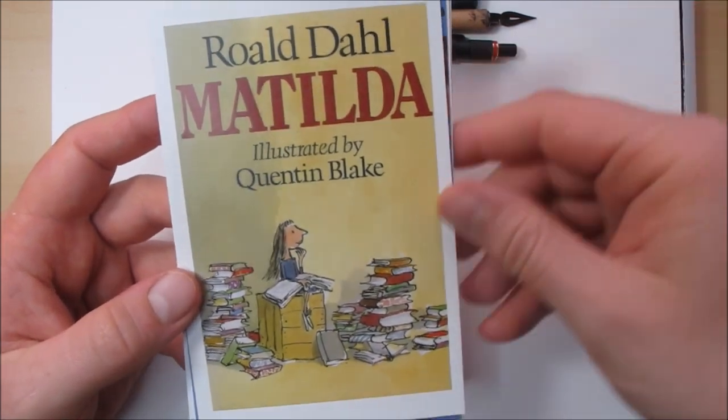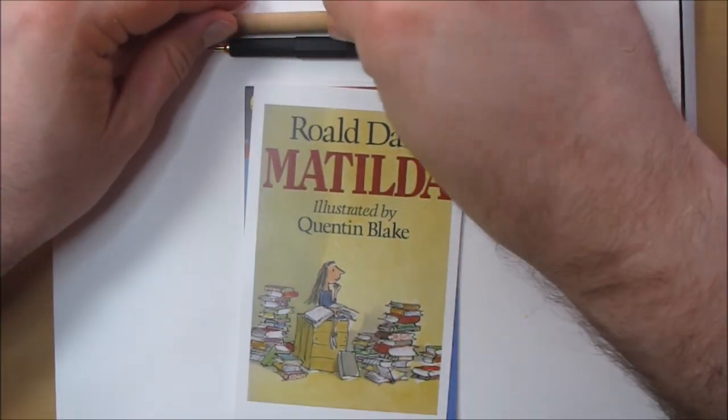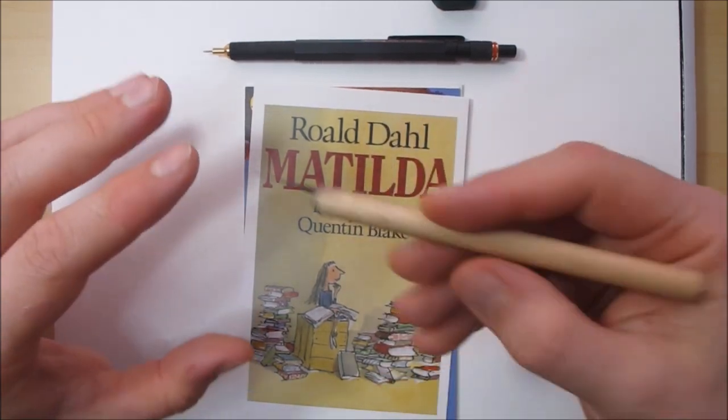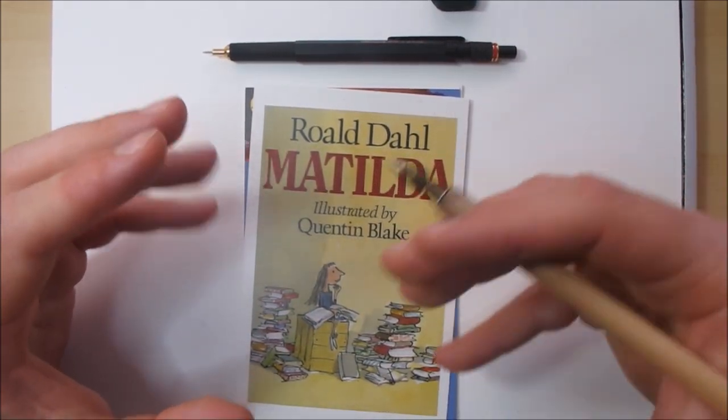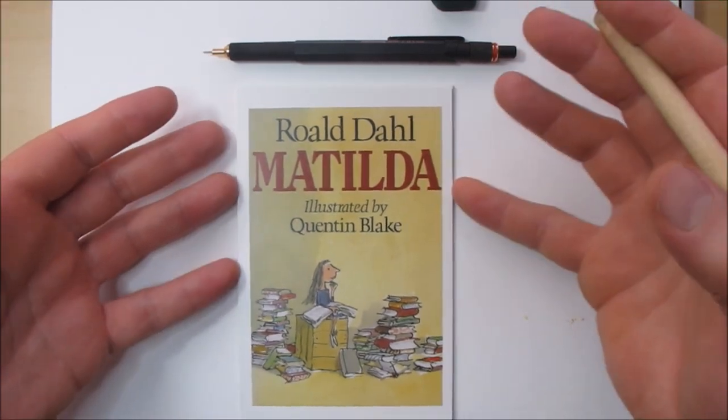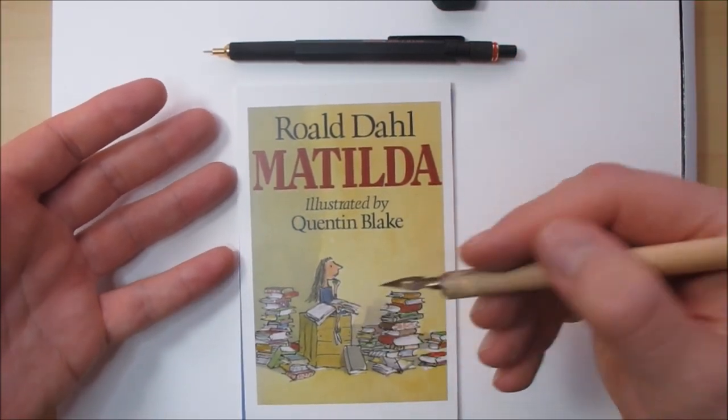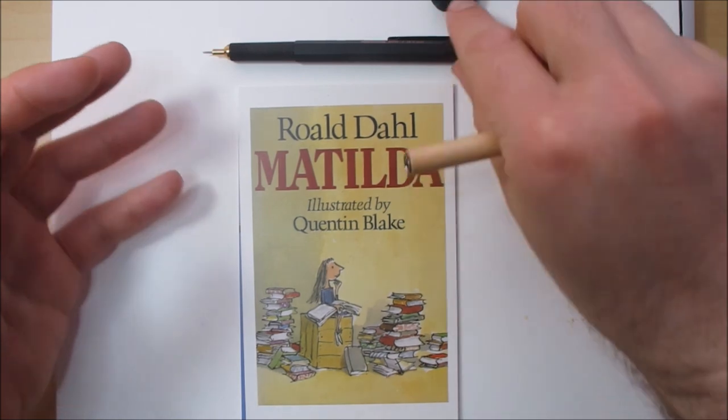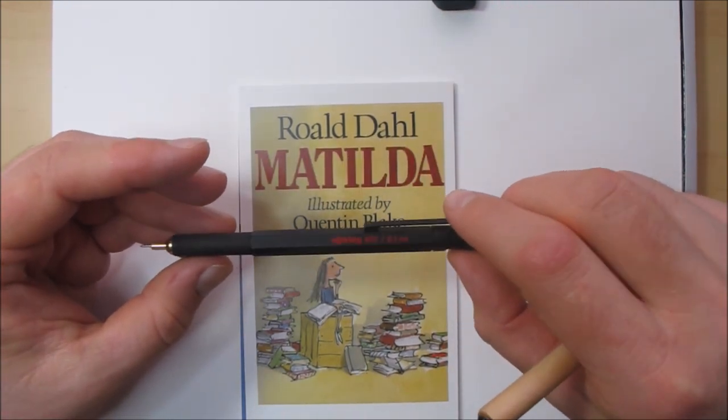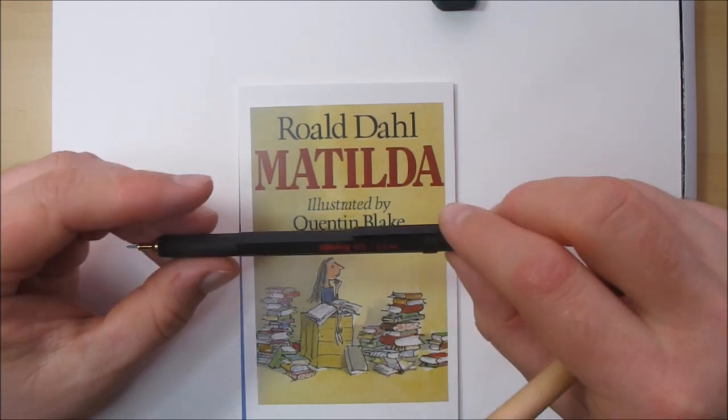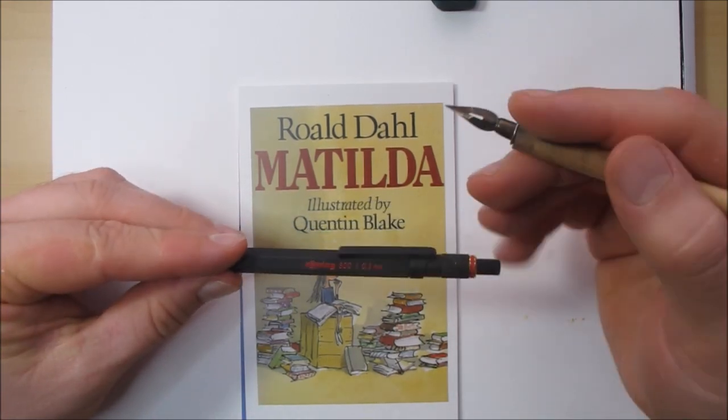Quentin Blake tends to just use a dip pen and put his art straight on the paper from what I understand. As it's not a style that I'm used to, I am going to draw out the lines first in pencil, just as a guide, and then go over them with ink.